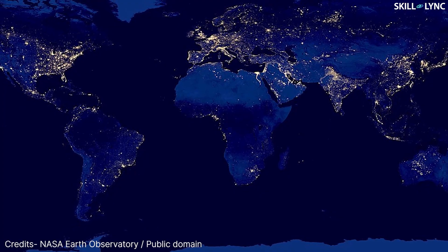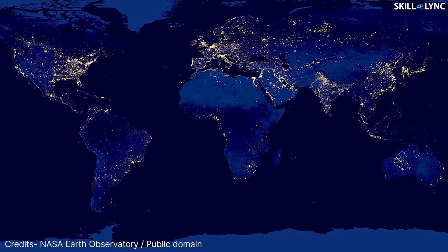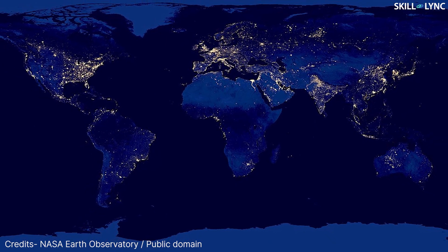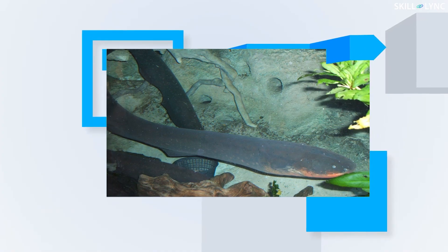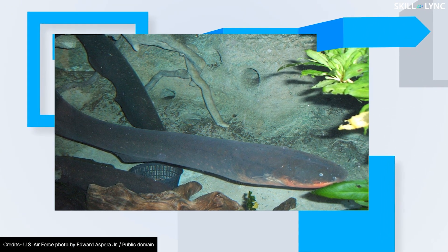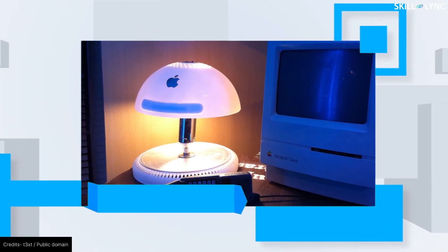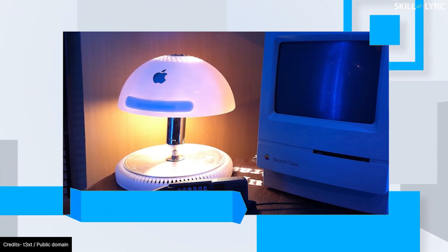Hey guys, welcome back to the channel. Humans today are highly dependent on electricity. Even before people knew anything close to the existence of electricity, they were aware of electric shocks which they experienced from electric fishes. Interesting, right? This was back in 2750 BC.